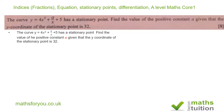The curve y is equal to 4x² + ax + 5 has a stationary point. Find the value of the positive constant a, given that the y-coordinate of the stationary point is 32.